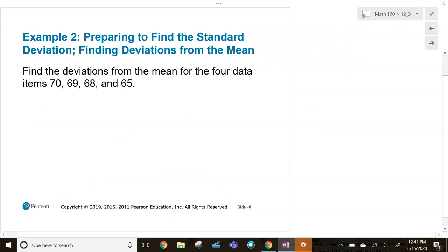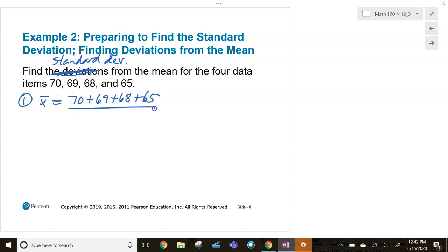Find the deviations from the mean. You know, what we're going to do here is not only find the deviation, but let's just go ahead and find the standard deviation. We'll go through and include, find the deviation. Find the standard deviation for the four data items, 70, 69, 68, and 65. So number one, what you want to do is you want to find your mean first. We're going to need that. So you go 70 plus 69, plus 68, plus 65, all divided by, looks like there's four numbers and this ends up being 68, looks like.